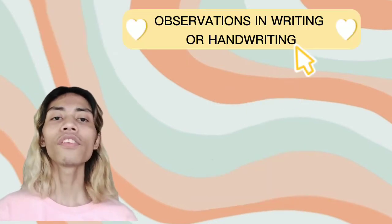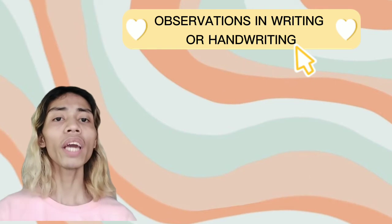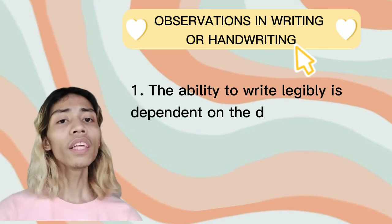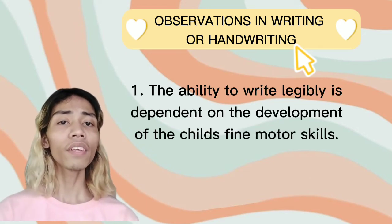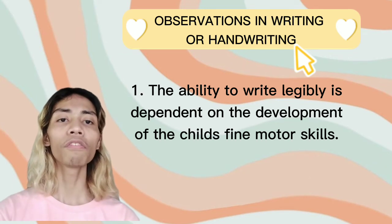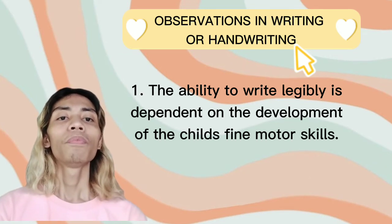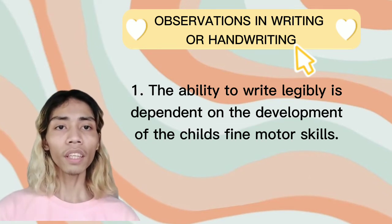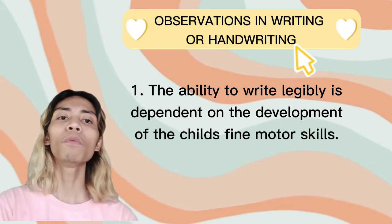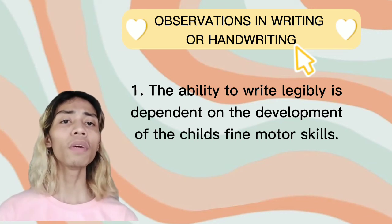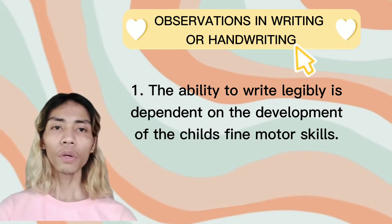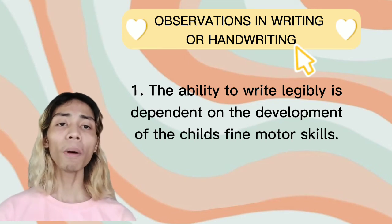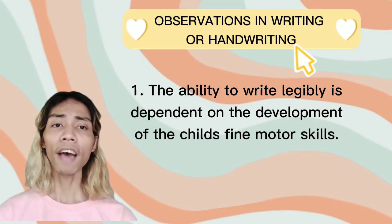Here are some observations in handwriting. The first one: the ability to write legibly is dependent on the development of the child's fine motor skill. Motor skill is a function that involves specific movements of the body's muscles to perform a certain task. It is said that if a child has good motor skills, then they have a higher probability of learning how to write in a faster way.